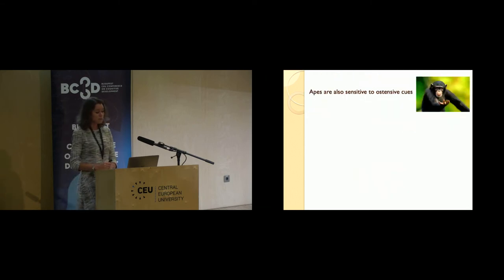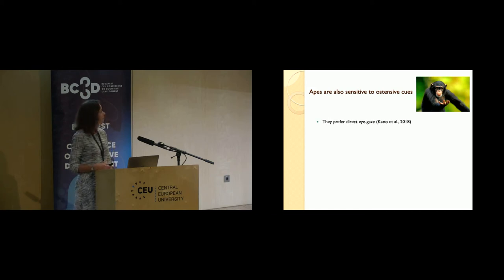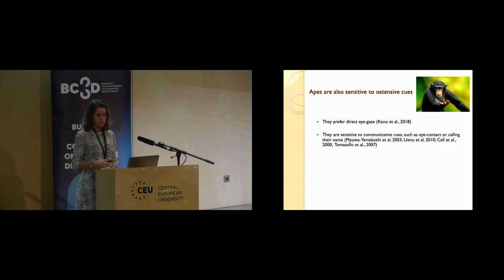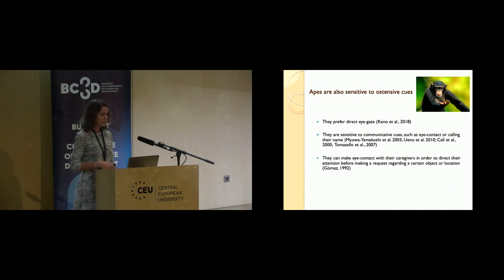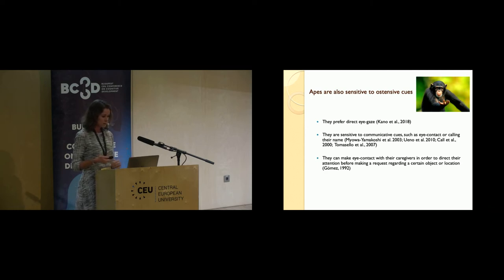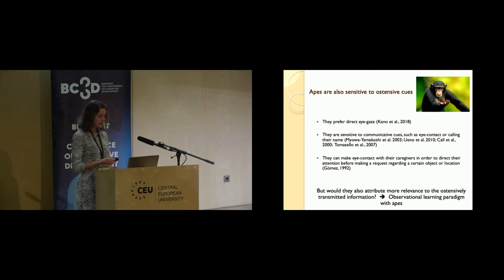What about apes? There is some evidence that they are also sensitive to ostensive cues: similar to humans, they prefer direct eye gaze over averted eye gaze, and are sensitive to communicative cues such as eye contact or calling their name. Under certain circumstances they would also produce these cues. So there is similar sensitivity to ostension in apes. But what we don't know is whether they would also attribute more relevance to ostensibly transmitted information.